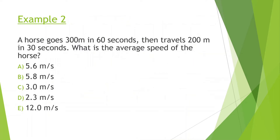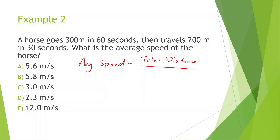Let's look at this next problem. A horse goes 300 meters in 60 seconds, then travels 200 meters in 30 seconds. What is the average speed of the horse? When we're talking about average speed, what we should know is this is equal to the total distance divided by the total time.